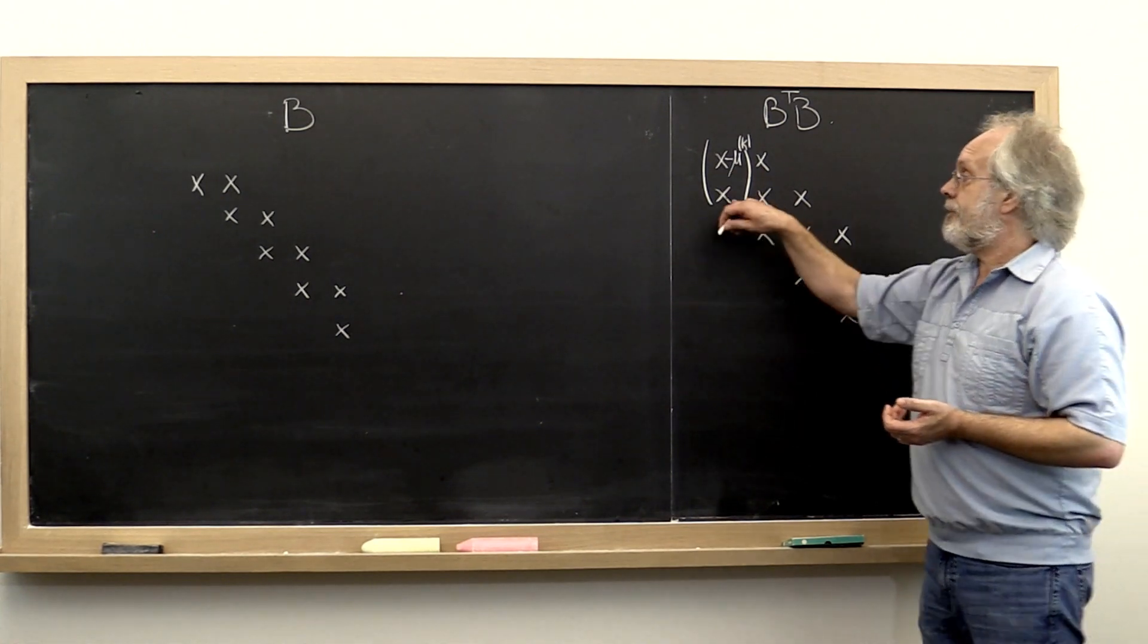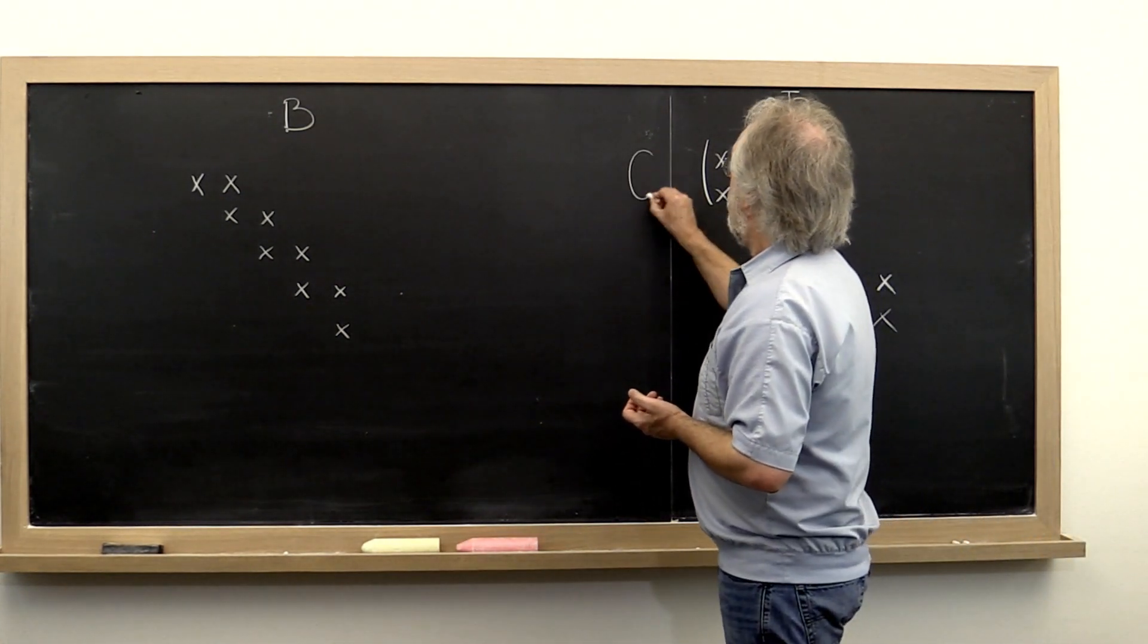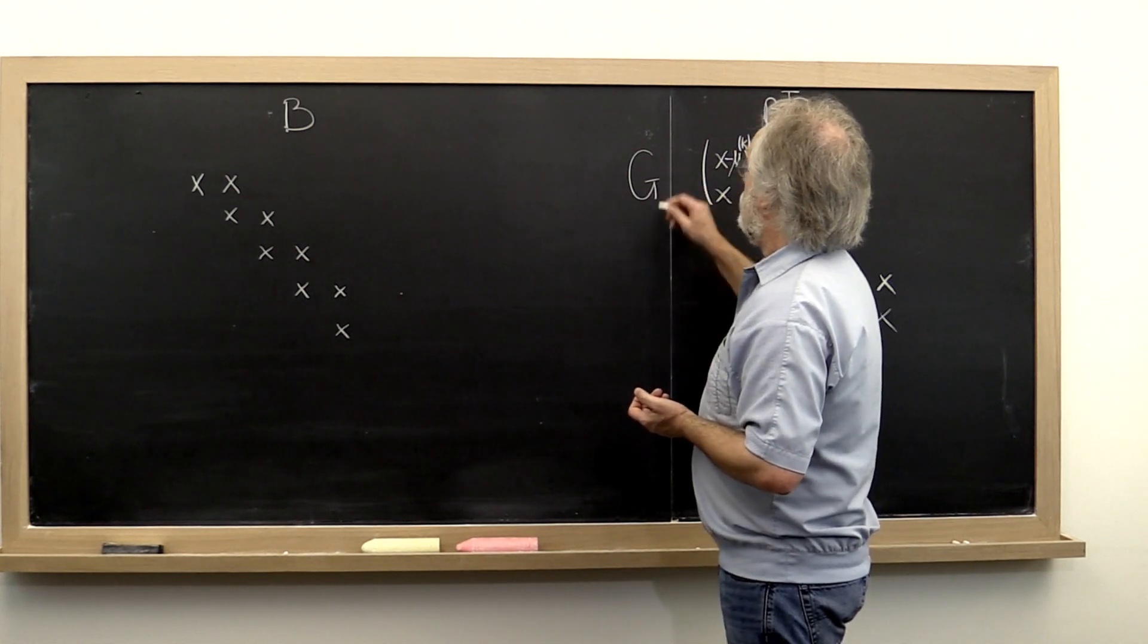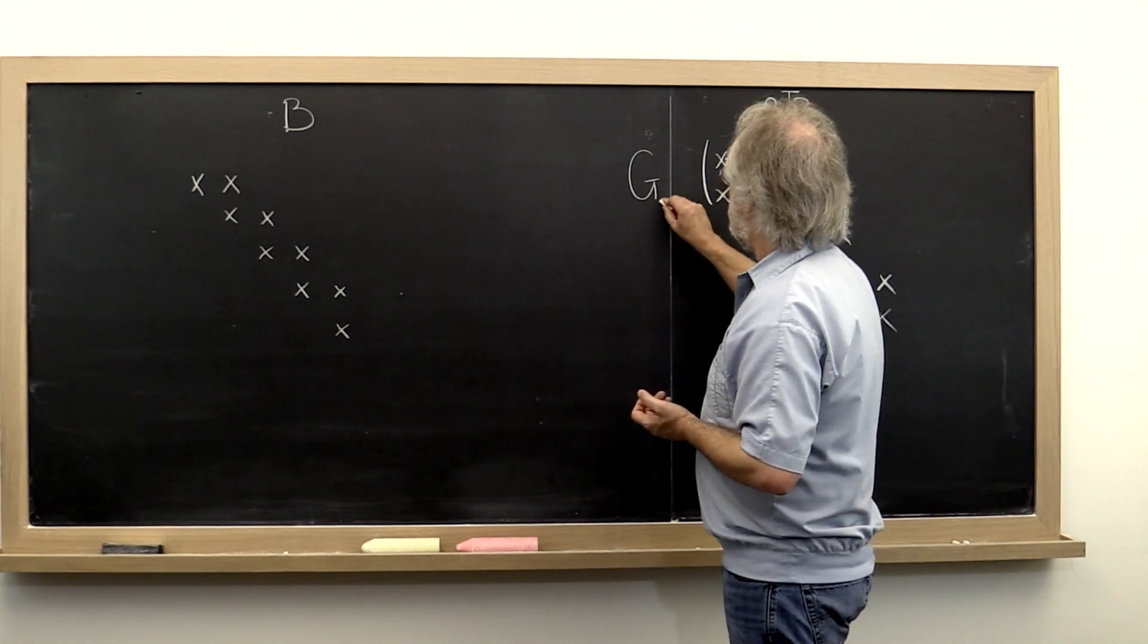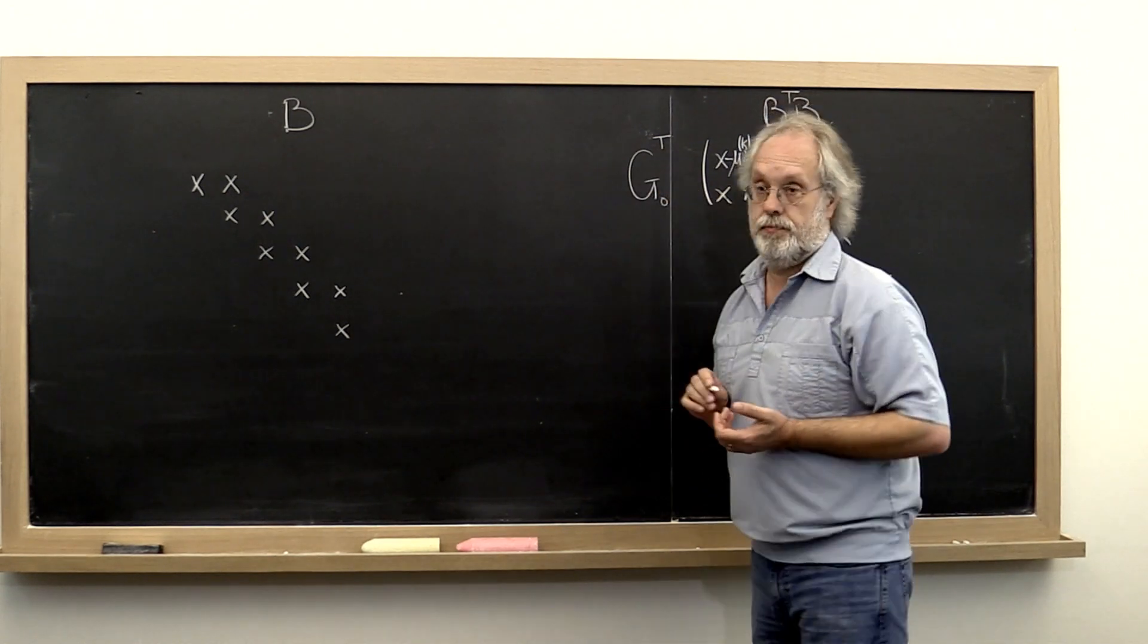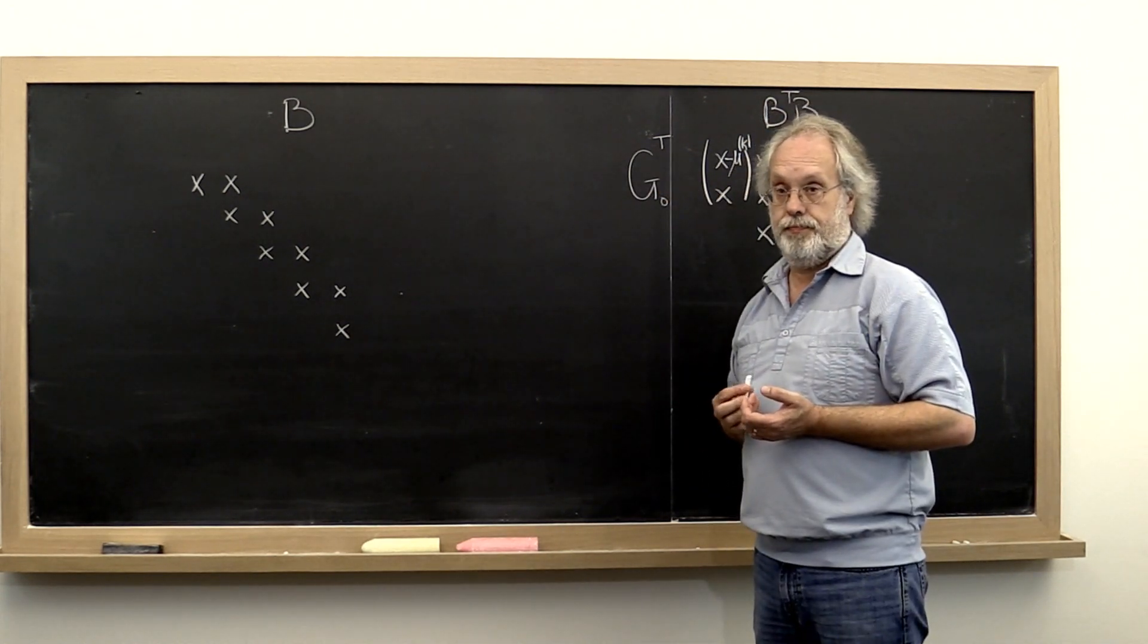And from that then we can compute our first Givens rotation, which when applied from the left was G0 transpose.